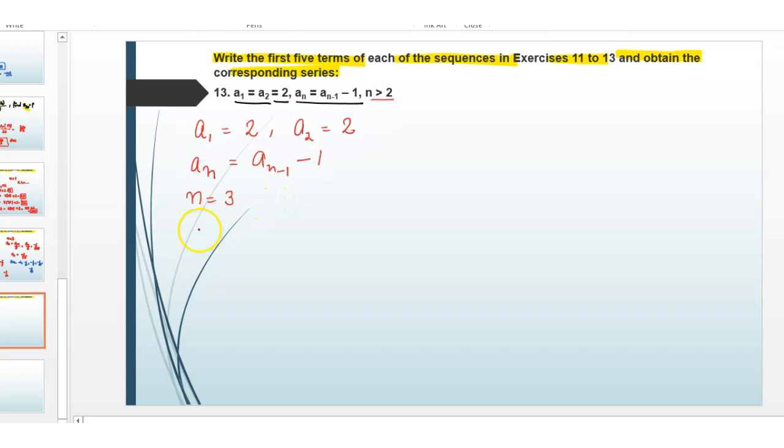So a3 equals a(3-1) minus 1, which equals a2 minus 1, which equals 2 minus 1 equals 1.